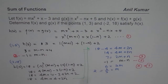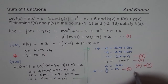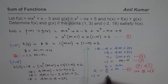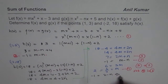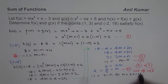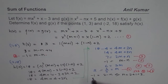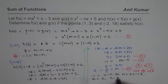Substituting m equals 2 into equation 2: minus 1 equals 2 minus n, which implies n equals 2 plus 1, so n equals 3. So we get the value of n as 3. Now we know m equals 2 and n equals 3.